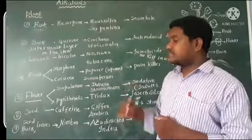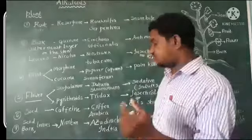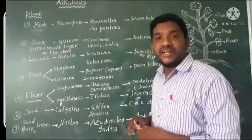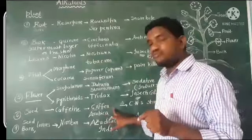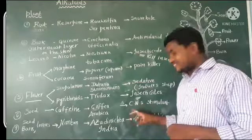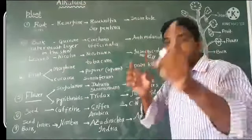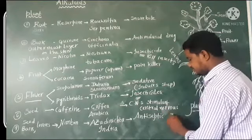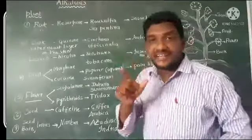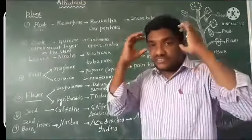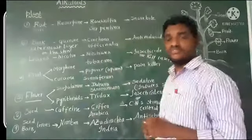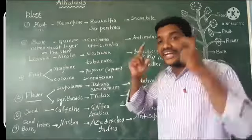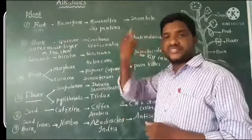Seeds are also useful. The alkaloid caffeine is obtained from the seeds of Coffee arabica — the coffee plant. Caffeine is a CNS stimulant, meaning it activates our central nervous system.